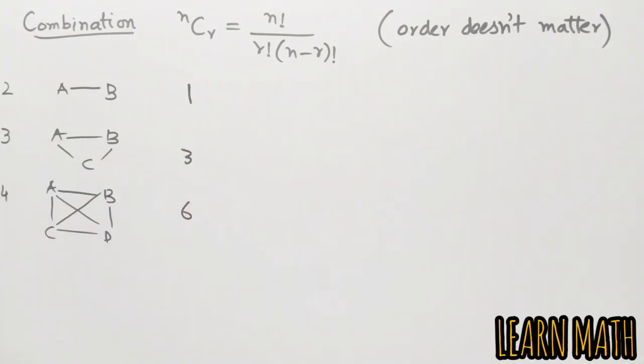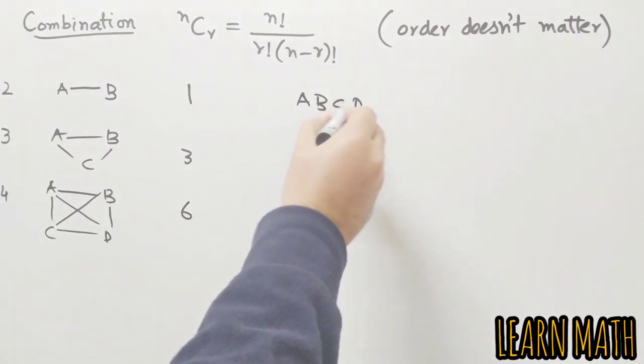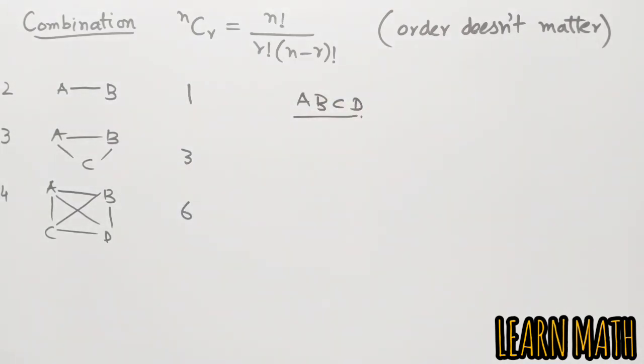If two persons, one handshake. Three persons, three handshakes. Four persons, six handshakes. Now we will use formula to verify this. Because the order of the persons does not matter, so n will be the number of persons.